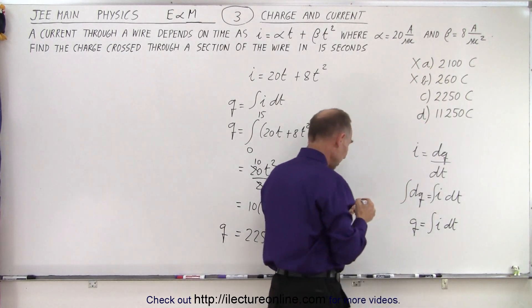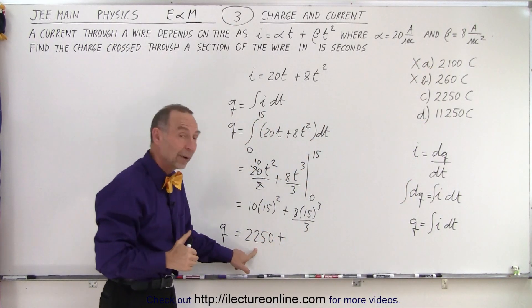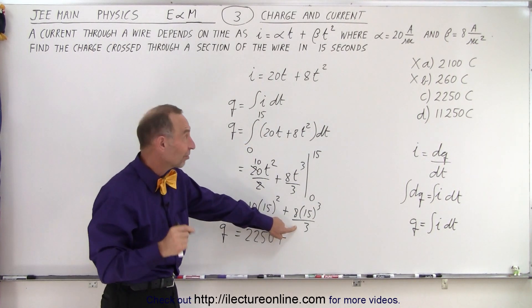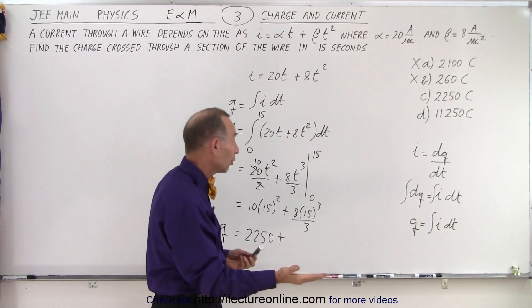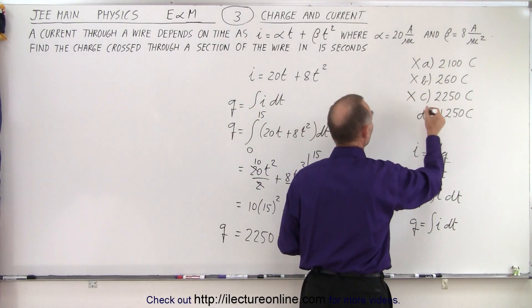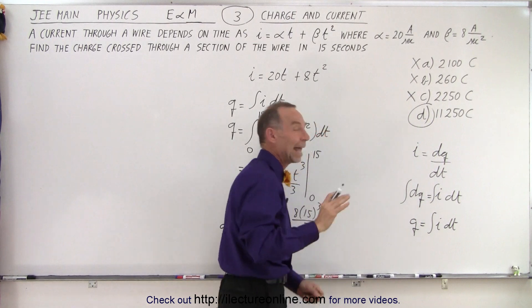If we look at the answers, we realize that this already exceeds the first two answers, so we know that a and b cannot be possible. Then if we look at the third answer, I already have the number equal to that without even calculating the value of the second term, which we know now will cause it to be greater than 2250 coulombs. So this is not possible, so we can conclude that it has to be d.